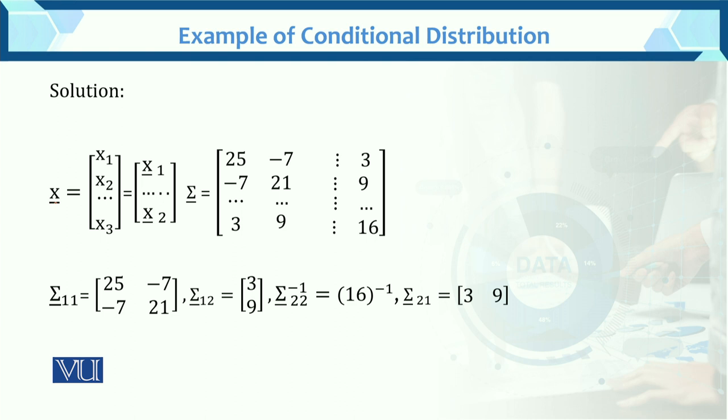Here is the variance covariance matrix and you know the variance covariance matrix which is equals to this. Now, the x partition kaise hoa, x1, x2 given x3. So, this is the x1 and this is the x2. Further partition kaise hoa gaya, x1, x2 given x3. So, this is the x1, x2.